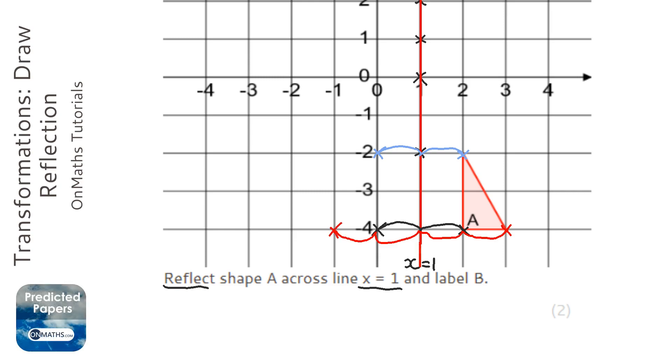And then all I'm going to do is just join those up. And it says label it B, so I'm just going to label that B.